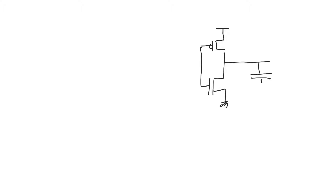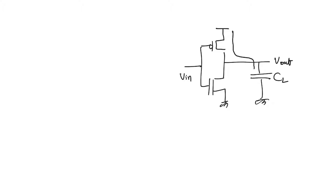It is true that there is no steady state current in CMOS, but that doesn't mean that current does not flow. Current flows in CMOS as we charge and discharge the capacitor. This is the current that actually gives us delay. The capacitor charges by drawing current from the supply through the PMOS, and if it's going to discharge, it discharges through the NMOS transistor.